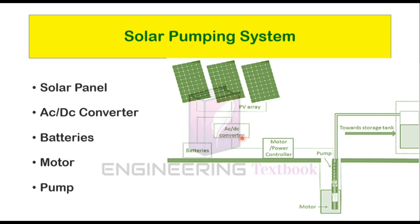This is the main part of the solar pumping system. Next is the AC to DC converter, which converts DC current coming from the solar panel into AC current. Next are batteries. The basic function of batteries is to store the current. It stores the charge produced by sunlight, and the energy produced by solar panels is supplied to a load and batteries.